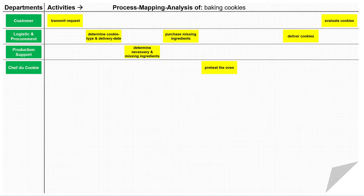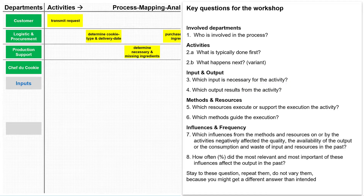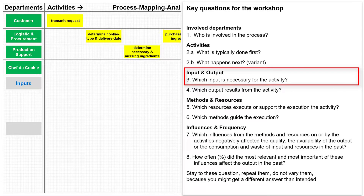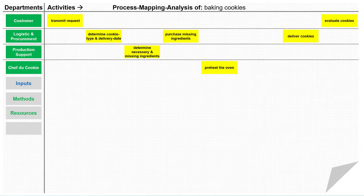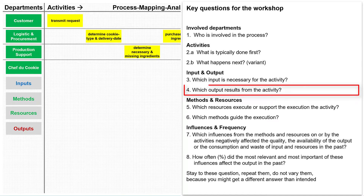Now I prepare the process analysis part for the collection of further information. In the next swim lane, the inputs of the activities can be specified — not strictly necessary for the analysis, but it can support orientation in the diagram. My third question is: which input is necessary for the activity? Strictly necessary for the analysis are the methods and resources used for the specific implementation of the activity. Any negative influence on or from a specific activity subtracts something from an assumed best-practice activity in terms of quality, availability, and consumption. It is not necessary to enter the outputs of the activities in the next swim lane, although this can facilitate orientation. My fourth question is accordingly: which output results from the activity?